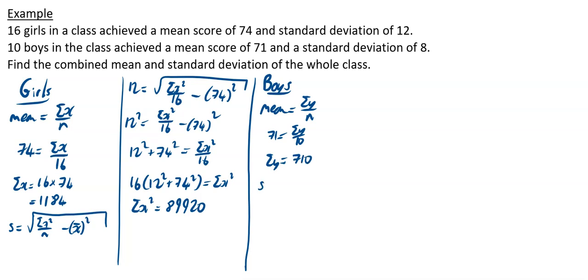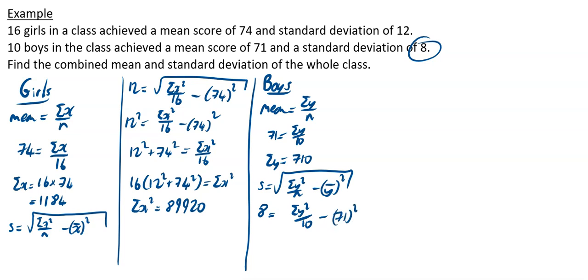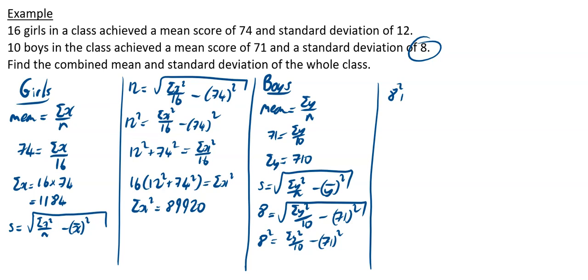Also for the boys, the standard deviation formula is the square root of sigma y squared over n, minus y-bar squared. The standard deviation is 8, so 8 equals the square root of sigma y squared over 10, minus 71 squared. Squaring both sides and rearranging: 10 times (8 squared plus 71 squared) equals sigma y squared. Filing that into the calculator gives sigma y squared equal to 51,050.